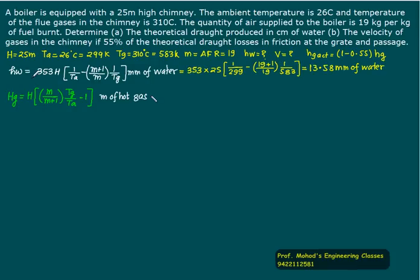If I use the equation of hw: 353 × height of chimney 25 × [(1/Ta) - ((m+1)/m) × (1/Tg)], where Ta is 299K, m is 19, and Tg is 583K. Solving this, we get 30.58 mm of water. If you want cm, then it equals 3.058 centimeters of water.